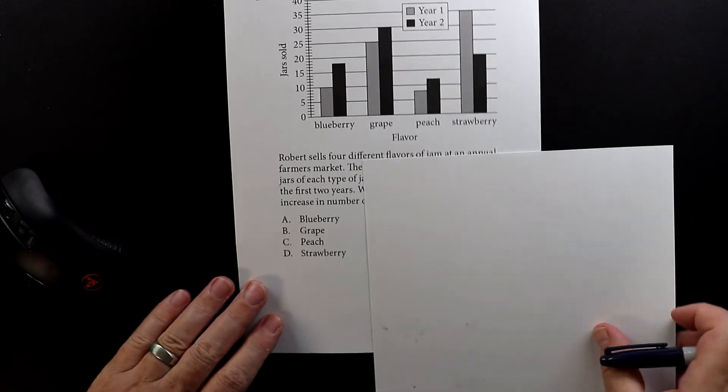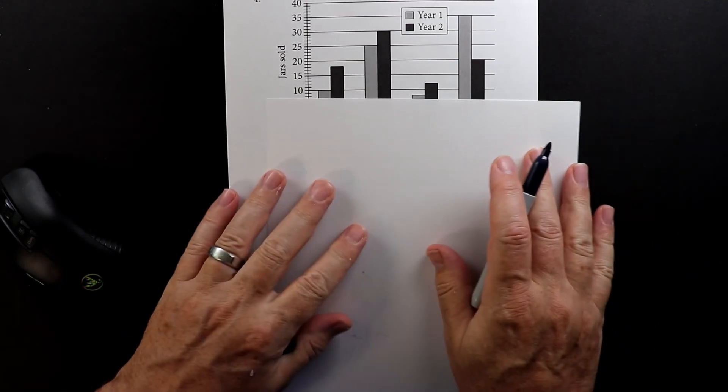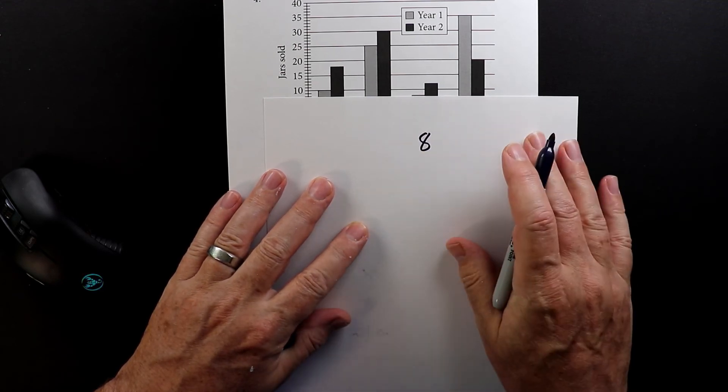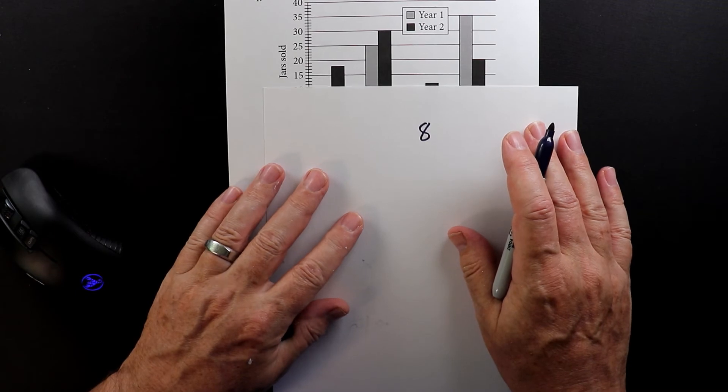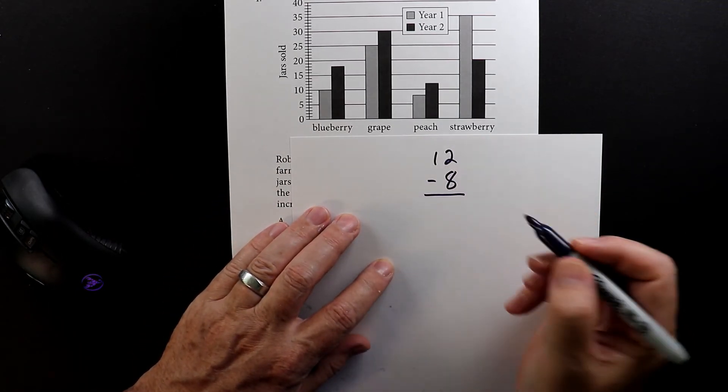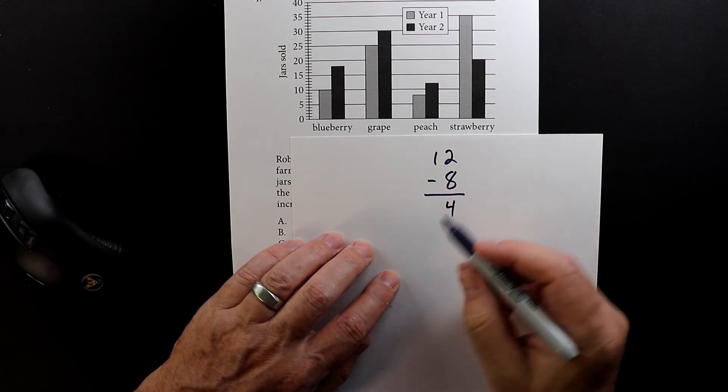So let's look at peach. Peach sold 8 the first year and then the second year sold 12. So I'm going to do 12 minus 8. 12 minus 8 is 4. So this is peach.